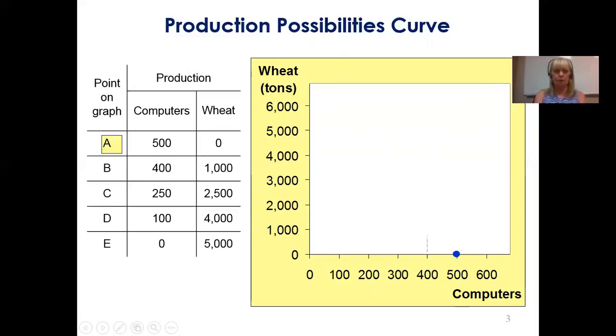So let's look at another one, point B. Now we're producing 1,000 bushels of wheat. So we come up to 1,000 on the vertical axis. But now we're only able to produce 400 computers. So we only go one, two, three, four, and there's your point B. You see how this is going, right? Point C, similar. We can produce 2,500 bushels of wheat. So we go up 2,500. But now we can only produce 250 computers. So we only go over 250. And there's our point C.